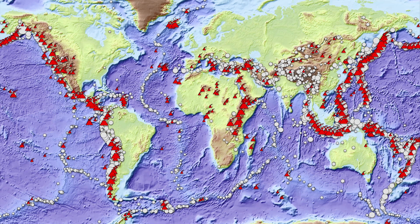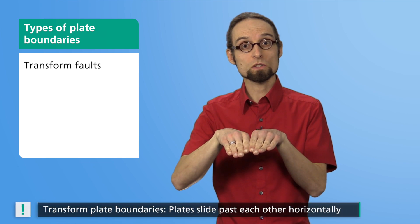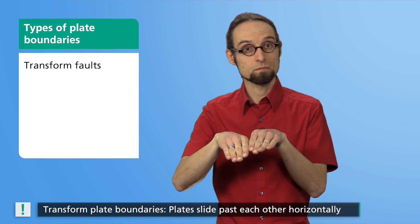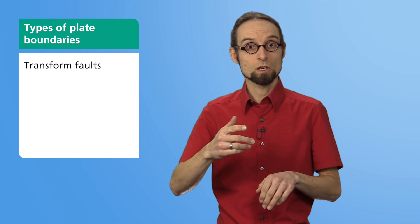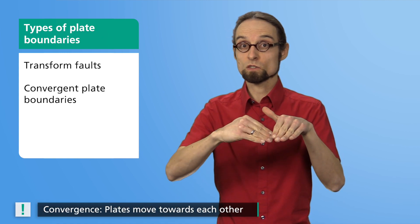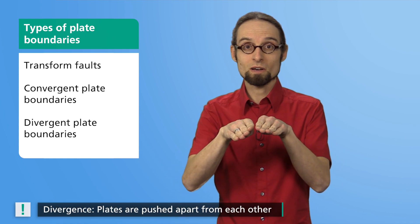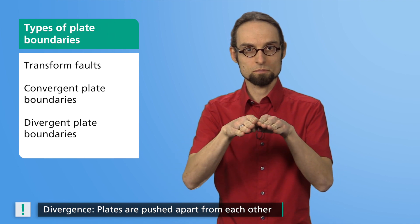We primarily categorize plate boundaries according to the direction in which adjacent plates move towards each other. We distinguish between a total of three types of plate boundaries: firstly, transform faults, where two plates slide past each other horizontally; secondly, convergent boundaries, at which two plates move towards each other; and thirdly, divergent boundaries, where two plates are pushed apart from each other.